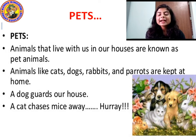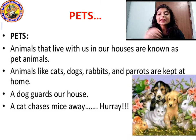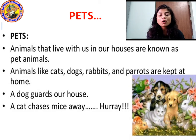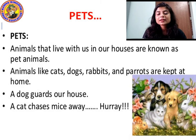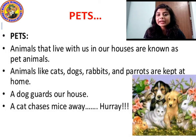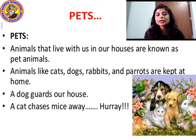Domestic animals like cow, hens, horses, goats, sheep, and ducks can be tamed and kept at farms or homes. These animals live in particular homes — hen lives in coop, pigs live in pigsty, birds live in nests, frogs live in ponds, dogs live in kennel, pet fish live in aquarium, spiders build spider webs, big fish like dolphins and whales live in sea, horses live in stable, and cows live in shed. Different animals have different names for their homes.